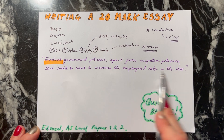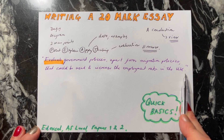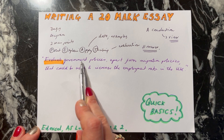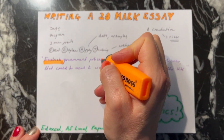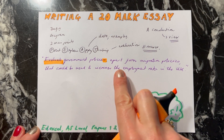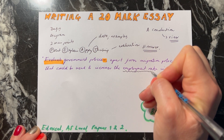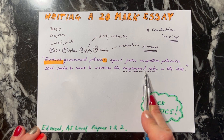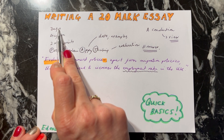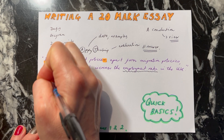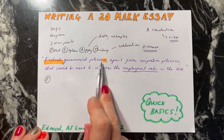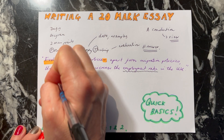So if we take this as an example — this is from the 2018 paper 2 — 'Evaluate government policies, be careful, it says policies so you have to write about at least two, apart from migration policies, that could be used to increase the employment rate in the UK.' A good thing to define here would be the employment rate, which is the number of people who are willing and able to work who have a job. When you've done your definition, go straight into your first point.